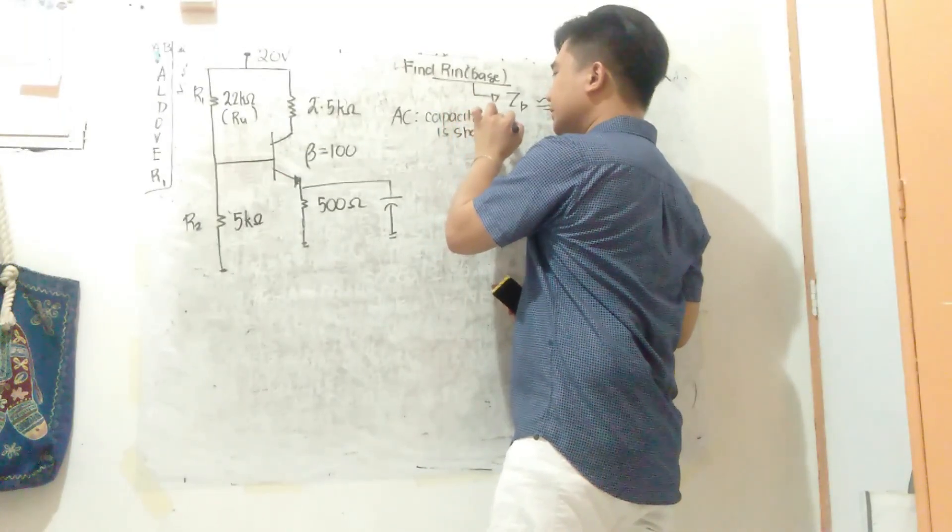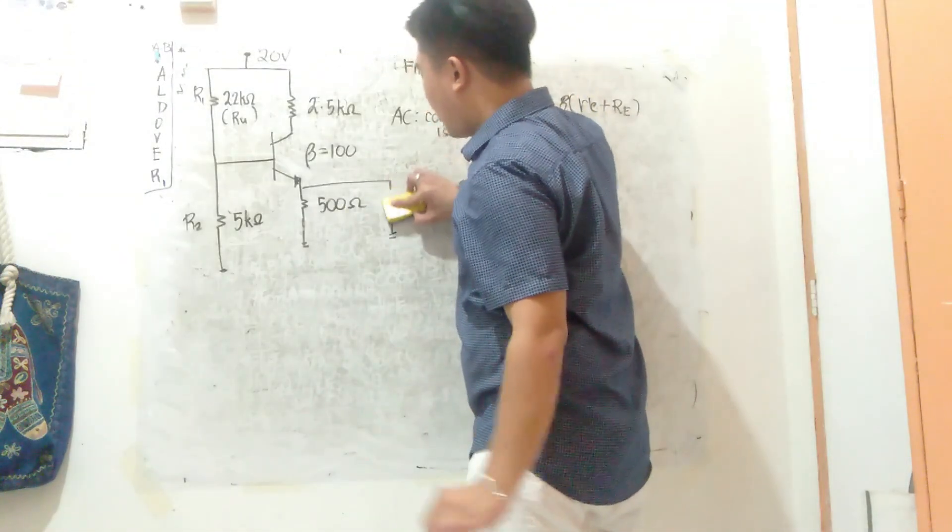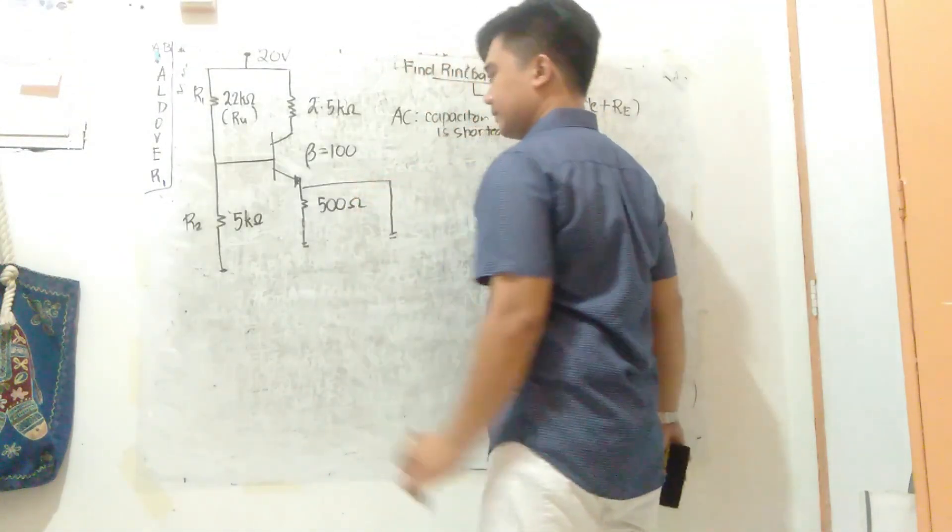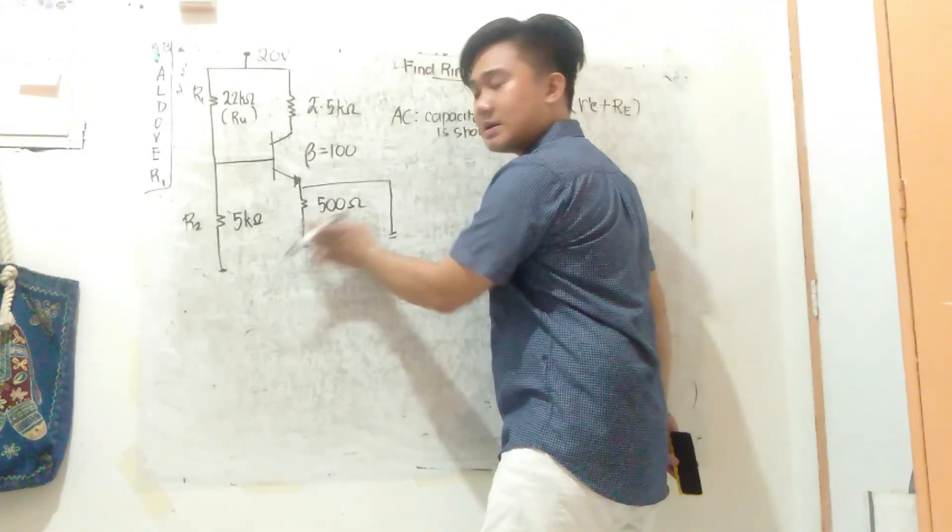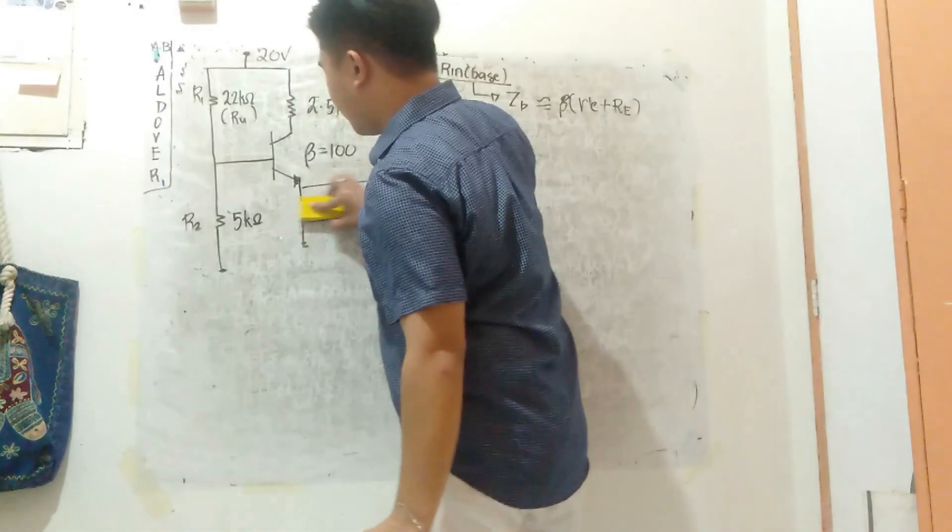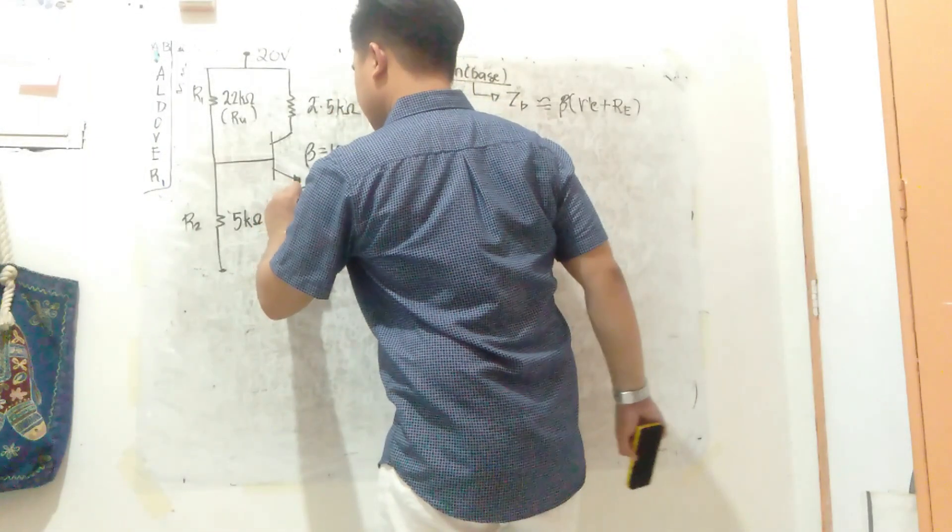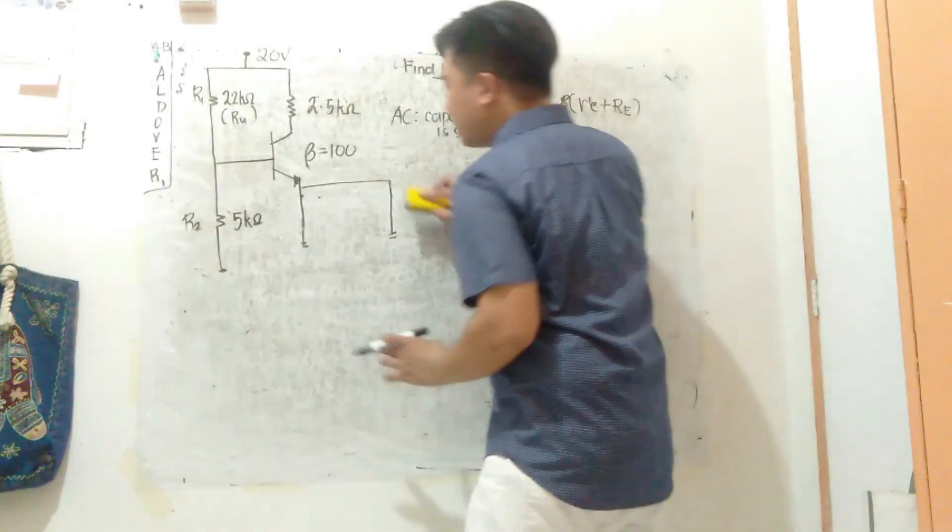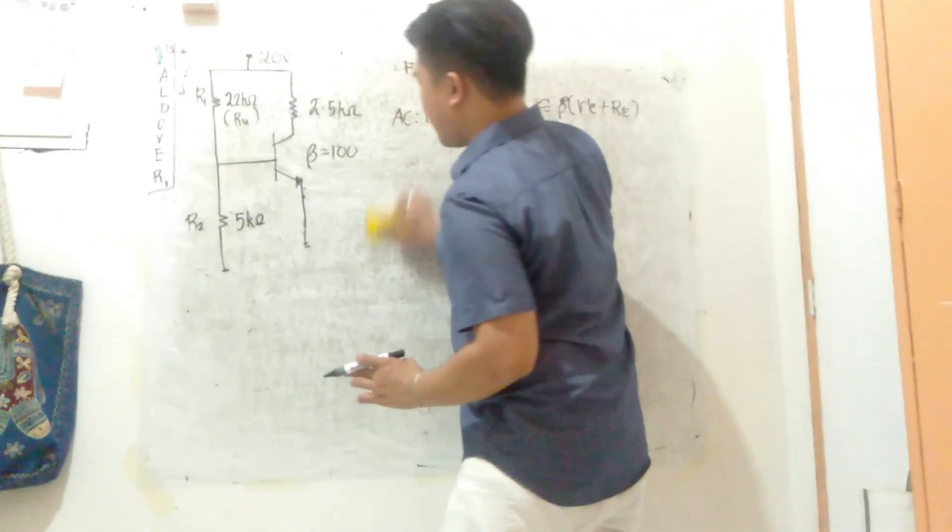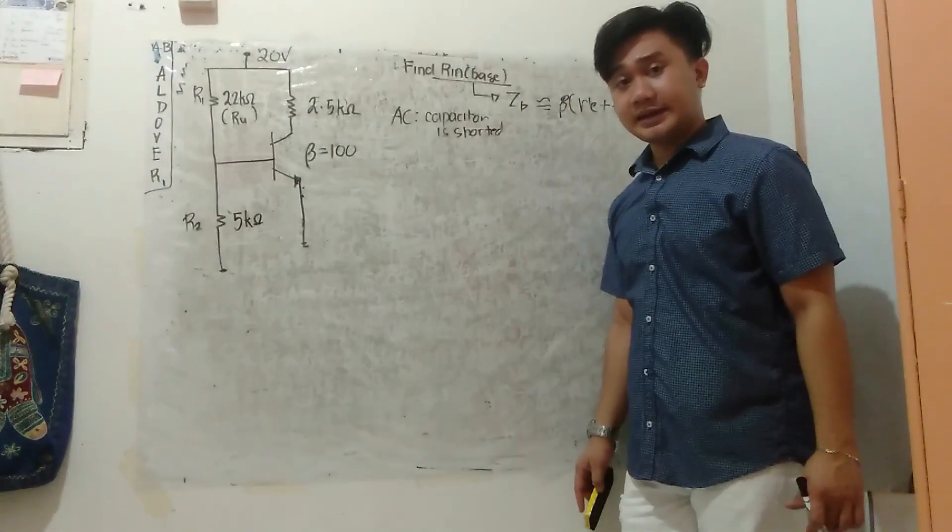When we say shorted, we just replace it with a wire. When I replace it with a wire, what's the effect on the 500 ohms? The 500 ohms is also shorted because I have a parallel wire. It's just a wire. Nothing changes there. Just wire.